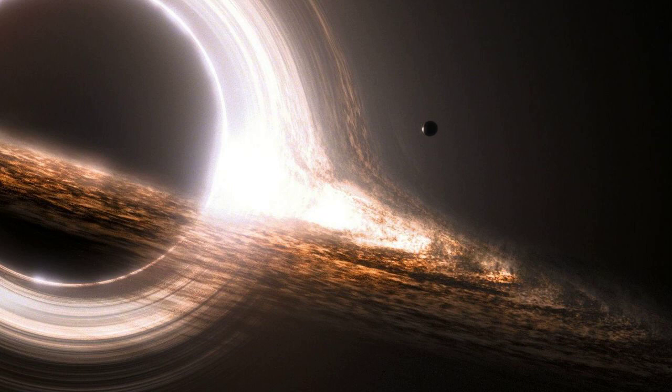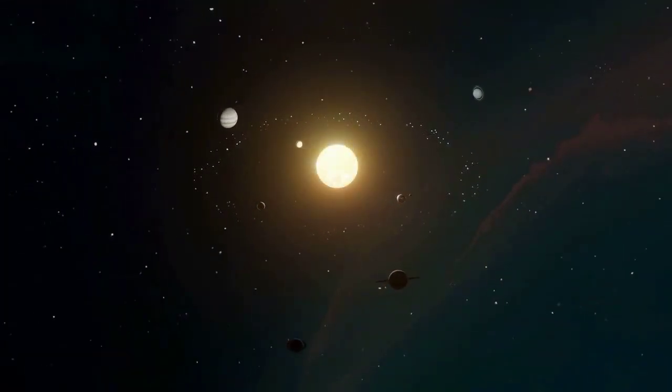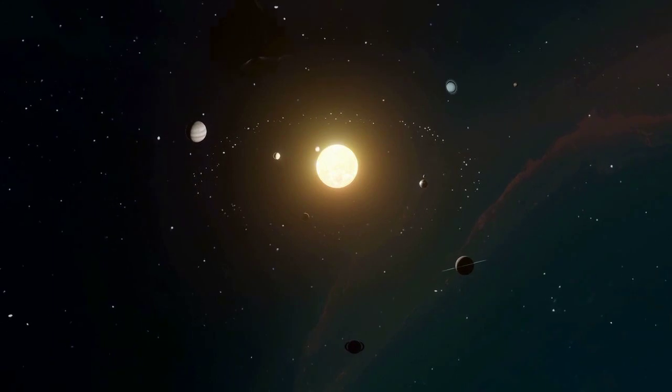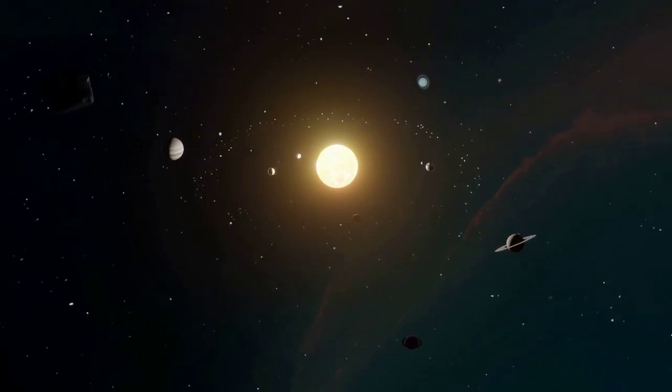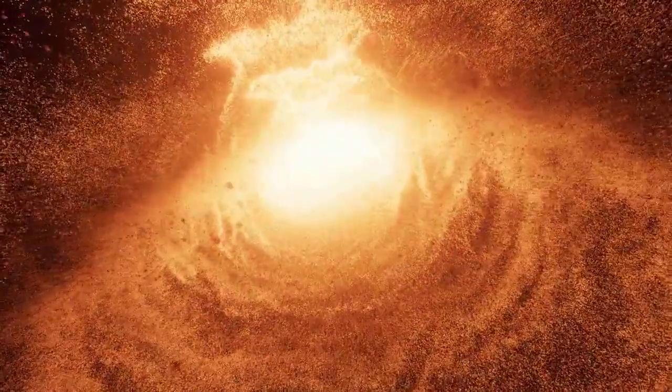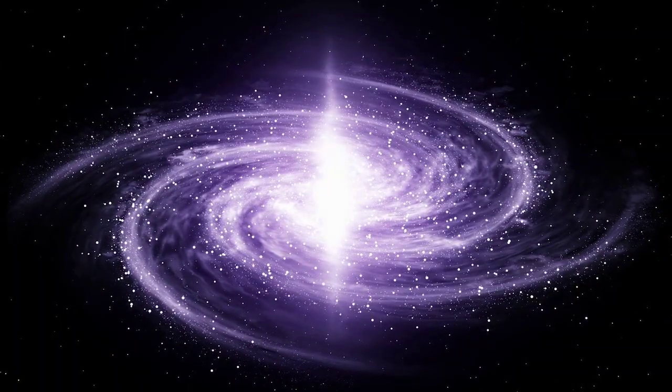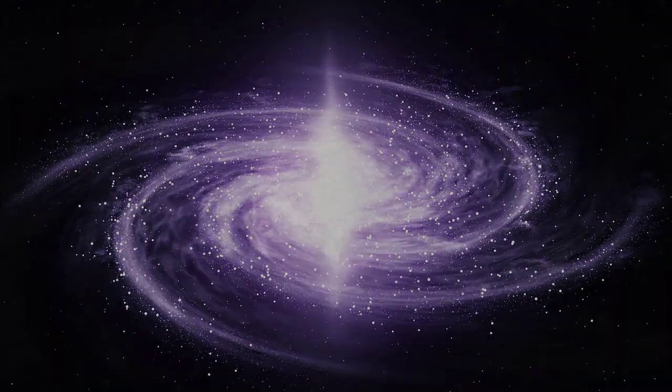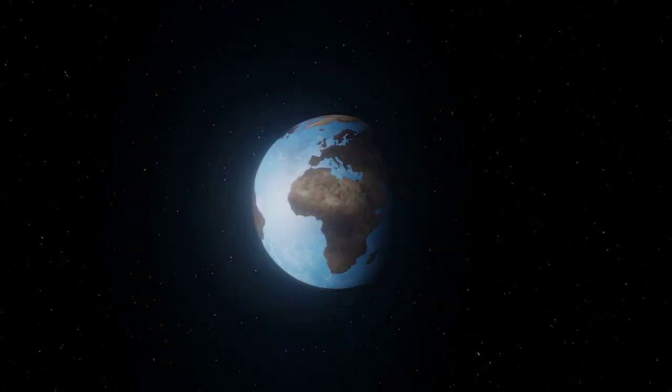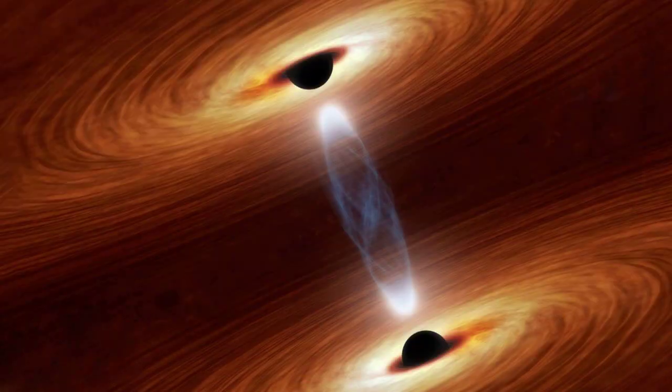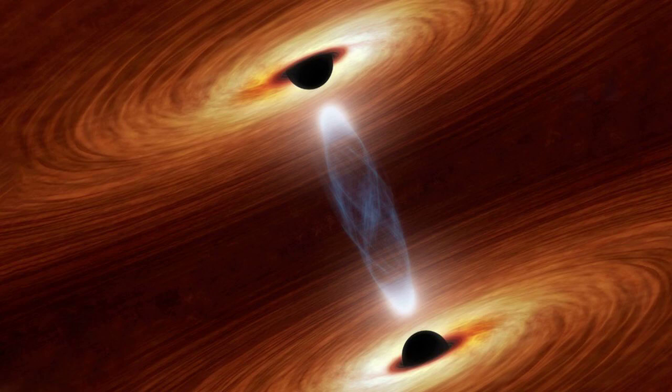A black hole is on a collision course with our sun, and there's nothing left for you to do except sit back and watch the destruction of our entire solar system. How exactly would this epic collision unfold? How would this black hole end up in our planetary neighborhood? And what would it be like to witness all this from Earth? This is What If, and here's what would happen if the sun collided with a black hole.